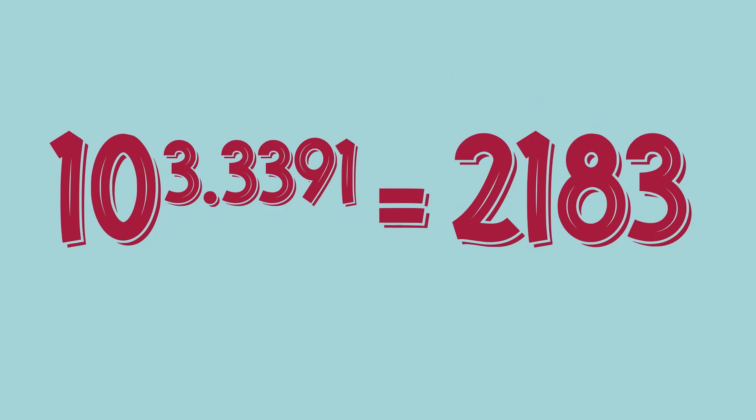When you count, you multiply this one. If you compare to the actual value, 37 times 59 is 2183. And if you add 10 to the power of 3.3391, it gives the answer. This is the basic: if I'm using 10 to the power of something, then I'm using base 10.